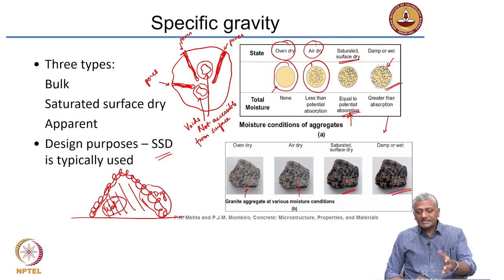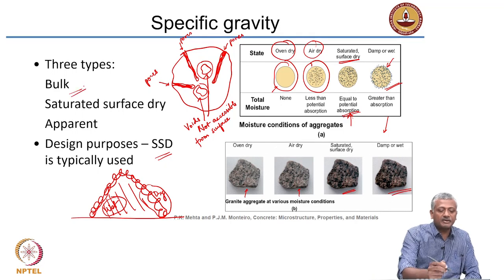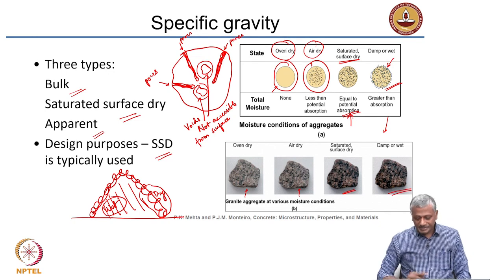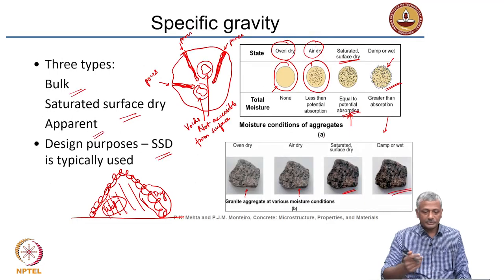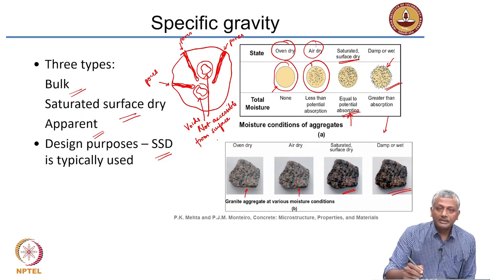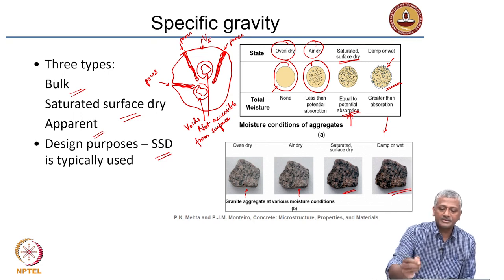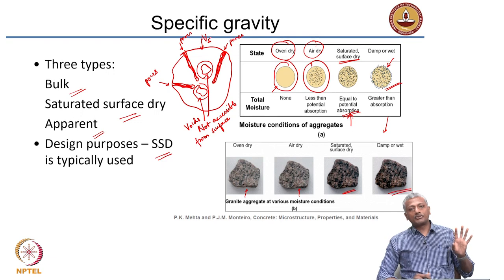Because of these different states of matter that the aggregate can exhibit, we have three types of specific gravity: bulk, saturated surface dry specific gravity, and apparent specific gravity. Let me work through this. Let us say the solid volume of the aggregate is Vs — that corresponds to only the solid volume without considering any porosity or voids — and the mass of the aggregate is Ms, the solid mass after completely drying the aggregate.